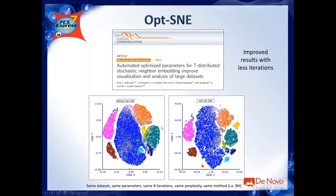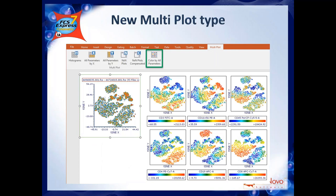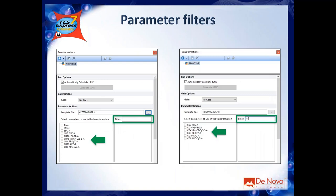The second upcoming feature is a new multi-plot type. Currently, creating color-based density plots is done manually — opening them one by one. In a couple of weeks you will just select your density tSNE plot, click 'Color by all parameters' in the multi-plot submenu, and all those plots will be created automatically. The third upcoming feature is a filter option — very useful when you have many parameters like 30 or 40.